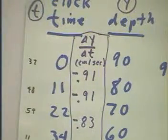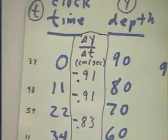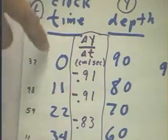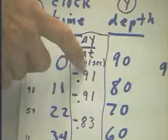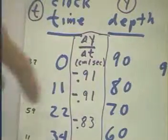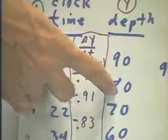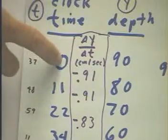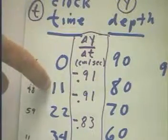This is what we mean by the rate at which the depth is changing, and this is what we're interested in. That's going to be in centimeters per second. So the depth changes from 90 to 80 during the 11-second interval from clock time 0 to clock time 11.